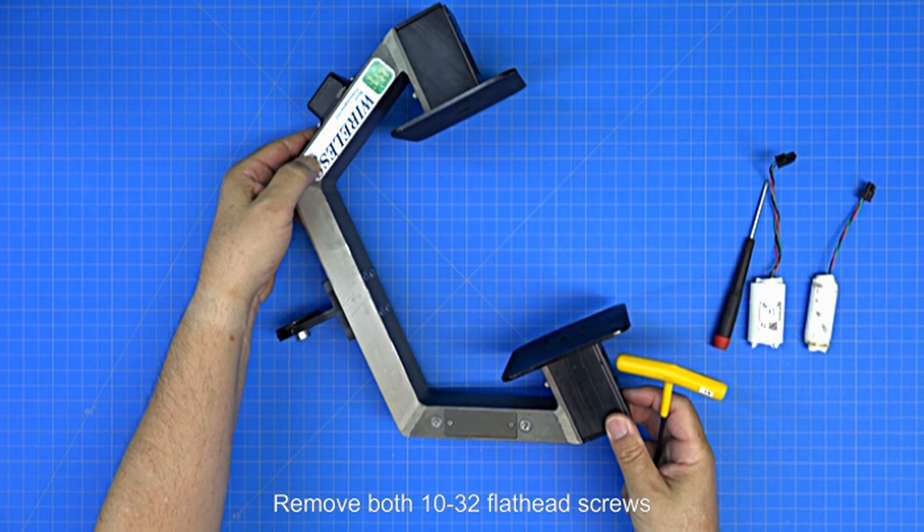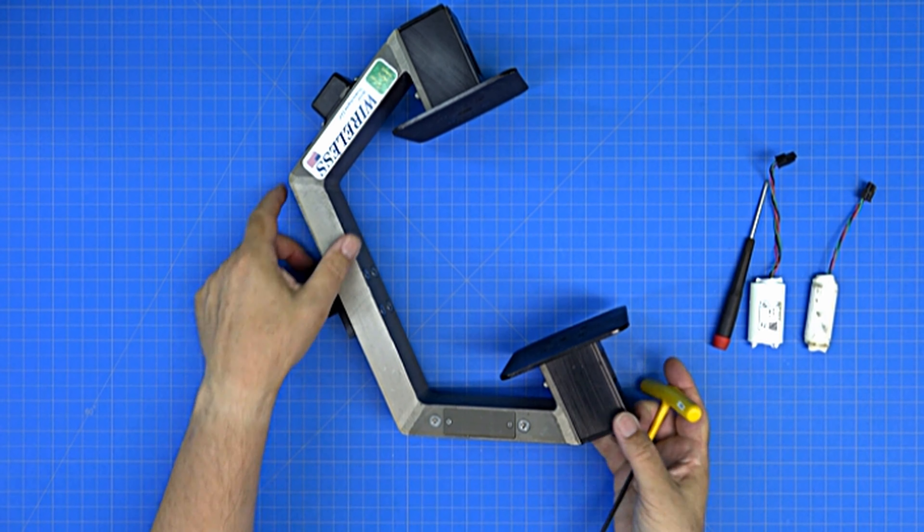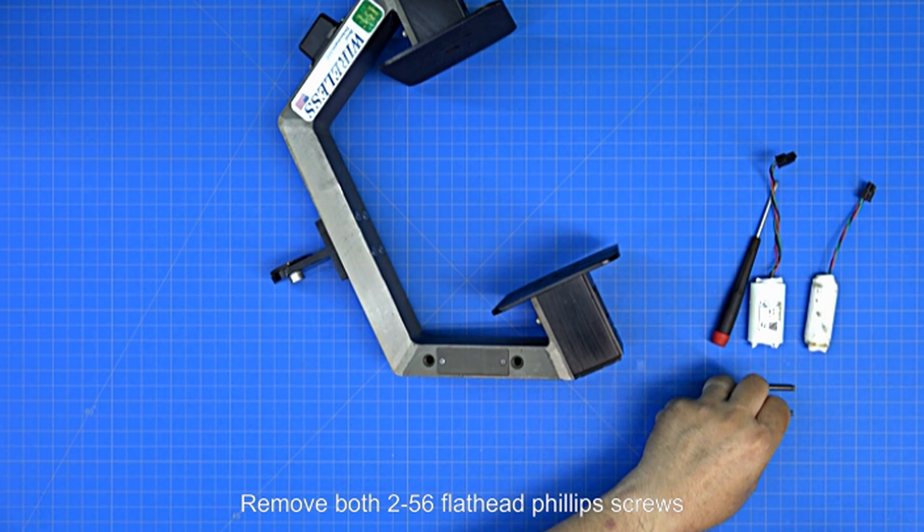Remove both 10-32 flat head screws. Remove both two 2-56 flat head Phillips screws.